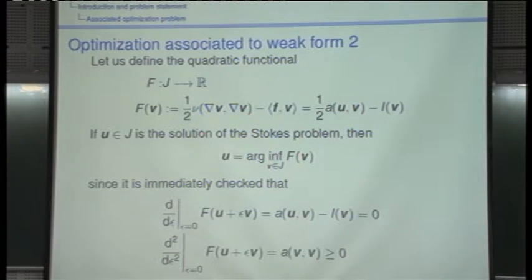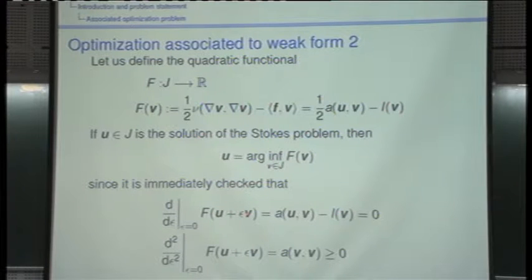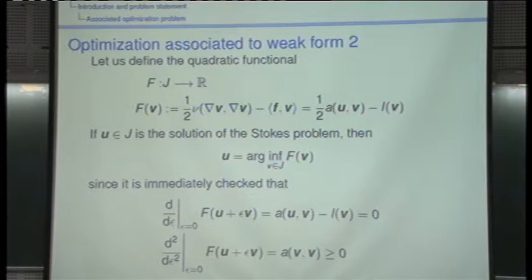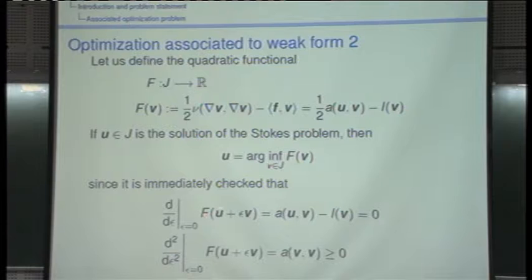By the way, yesterday I didn't mention: do you know how the derivative of a functional is called? What we do is fix u, take an arbitrary v, multiply v by epsilon, and take the derivative with respect to epsilon — so it's a sort of directional derivative in the direction of v. It has a name in the case of functionals. It's the so-called Gâteaux derivative — that is the weak one. The Fréchet derivative is the strong one.